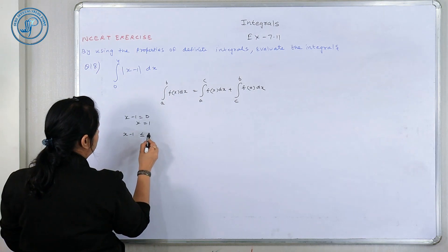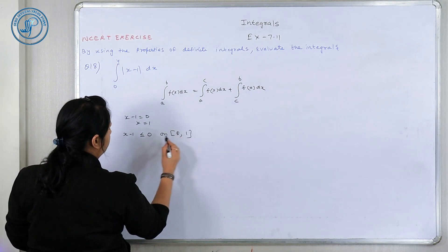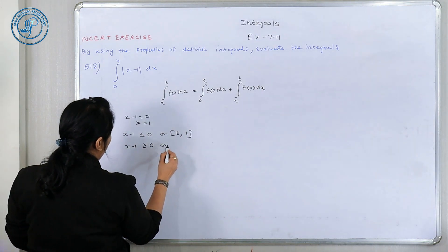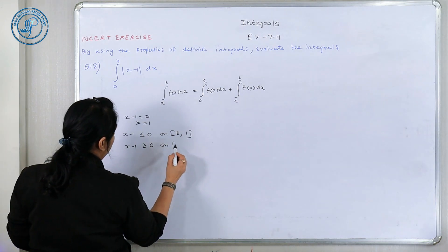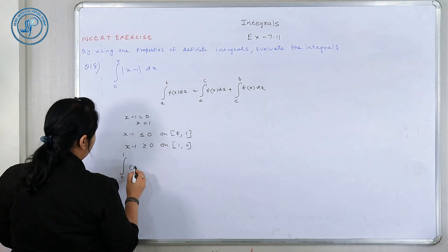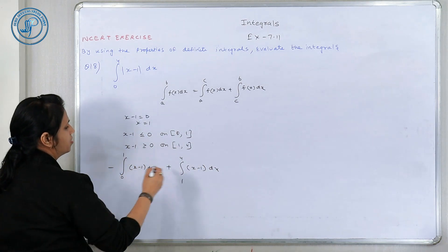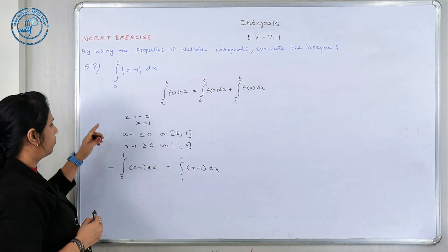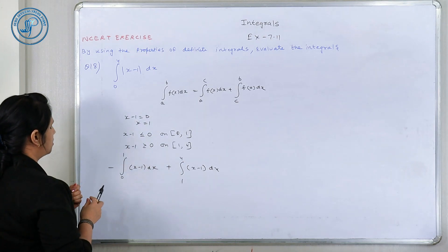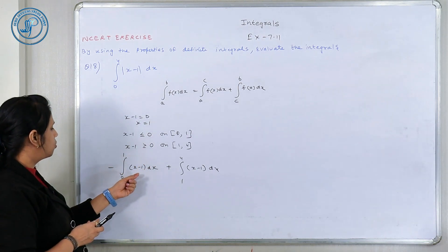तो मैं क्या कह सकती हूँ कि जो मेरा value है, less than equals to 0 होगा 0 से 1 पे, और यह function greater than equals to 0 होगा 1 से 4 पे। तो 0 to 1 में X minus 1 DX और 1 to 4 में X minus 1 DX। इस interval में negative, इस interval में positive। तो हम function define कर देंगे — 0 to 1 में negative है, और 1 से 4 में positive है। इन दोनों में से कोई भी value put कीजिए।